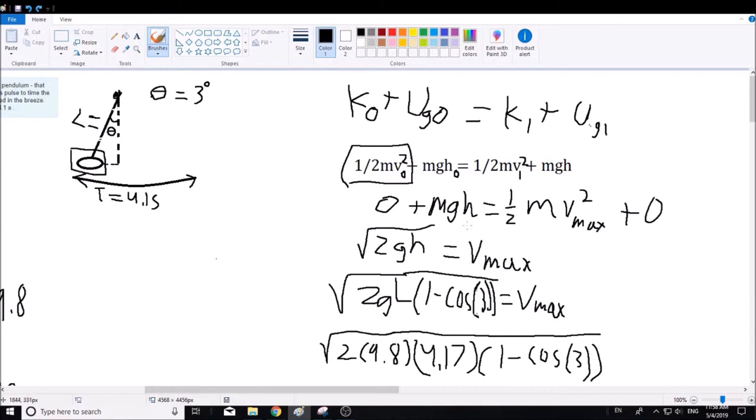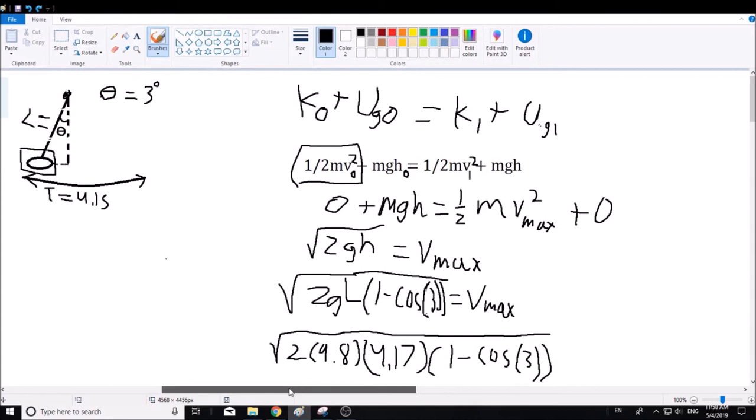For the maximum velocity, which is right in the middle, we will use that to find the maximum velocity. There will be no gravitational potential because it's at its lowest point and it can't go any further.